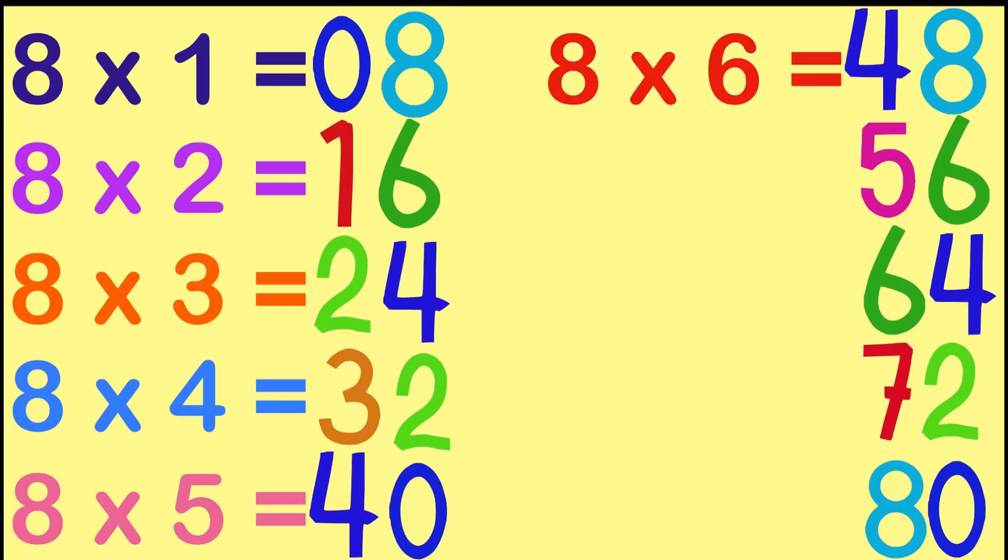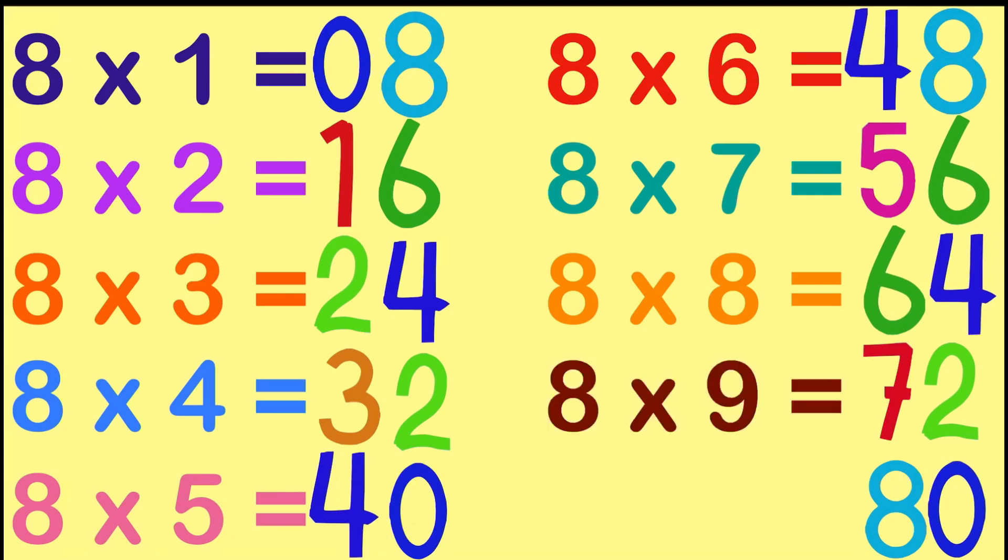8 x 6 equals 48, 8 x 7 equals 56, 8 x 8 equals 64, 8 x 9 equals 72, 8 x 10 equals 80. This is multiplication table 8 hack.